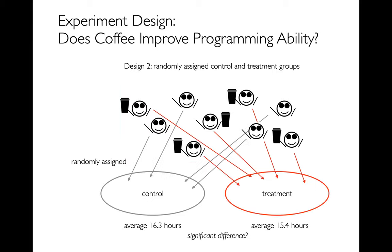A common approach is to take your population of programmers and up front divide them into two groups: a control group and a treatment group. It's very important to randomly assign people; otherwise you might end up assigning all the good programmers to the same group. If you give the treatment group QAFI and nothing to the control group, you can measure the difference — maybe 16.3 hours for control versus 15.4 hours for treatment. The big question is whether that difference is noise or a meaningful significant signal.